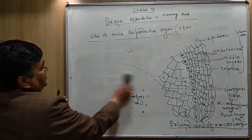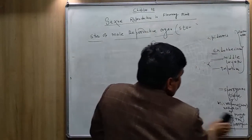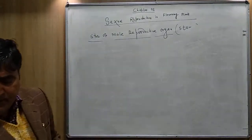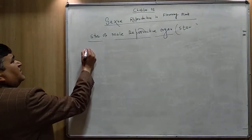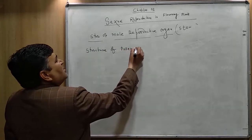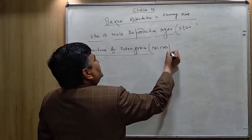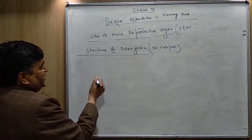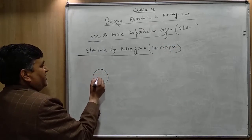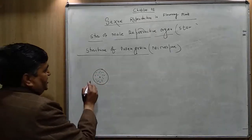The next heading is the structure of the pollen grain. Pollen grain is also known as microspore. Each pollen grain is unicellular in structure — it is made up of a single cell. It has two walls.